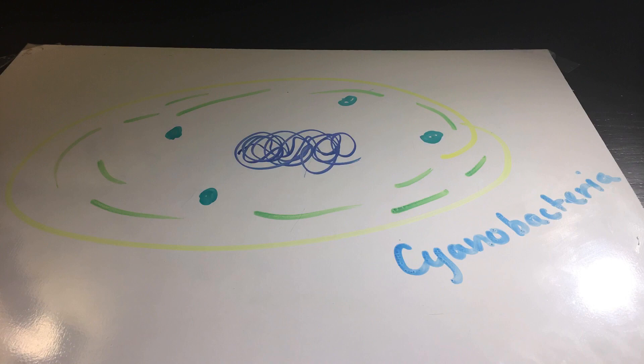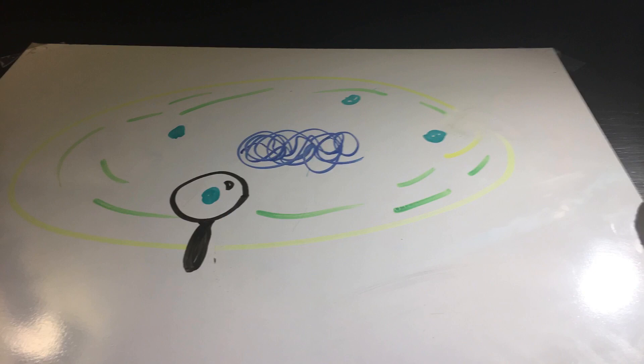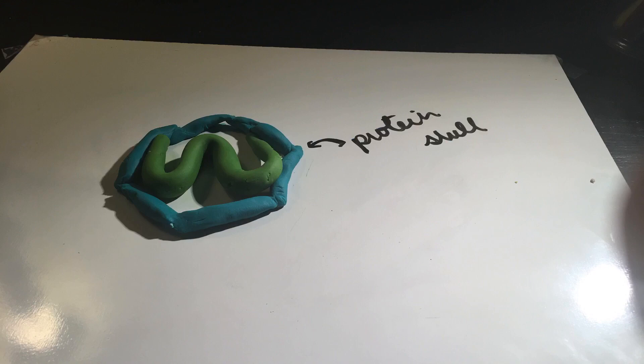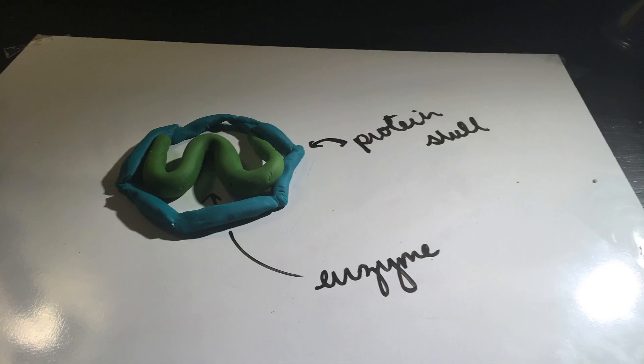However, cyanobacteria do have carboxosomes, a specialized protein structure that's pretty much a bacterial organelle. Carboxosomes are considered micro-compartments, small protein bodies that house an enzyme. They are a protein shell filled with a functionally similar but different kind of protein, an enzyme, kind of like a weird biological pistachio.